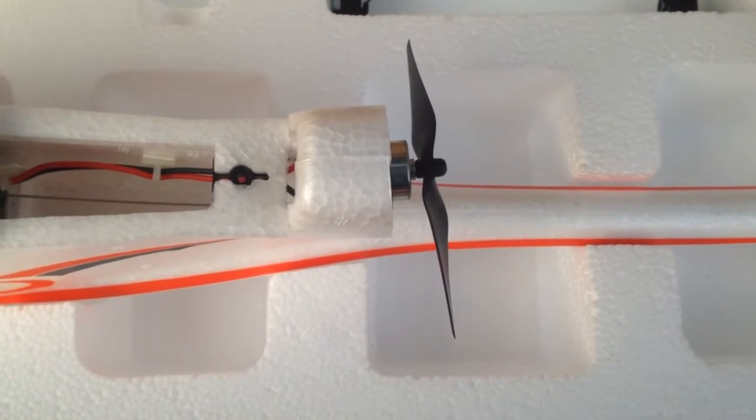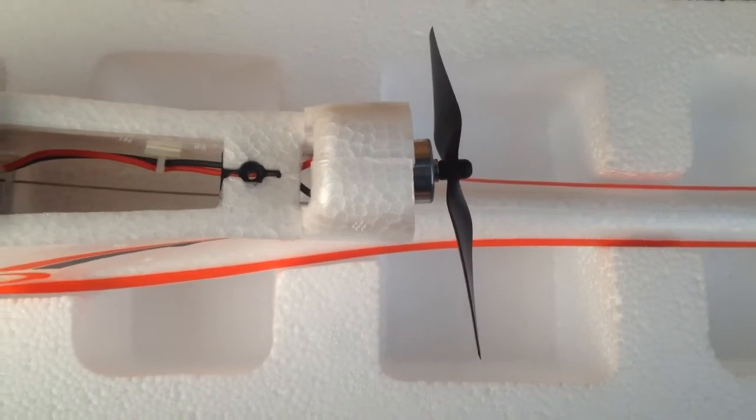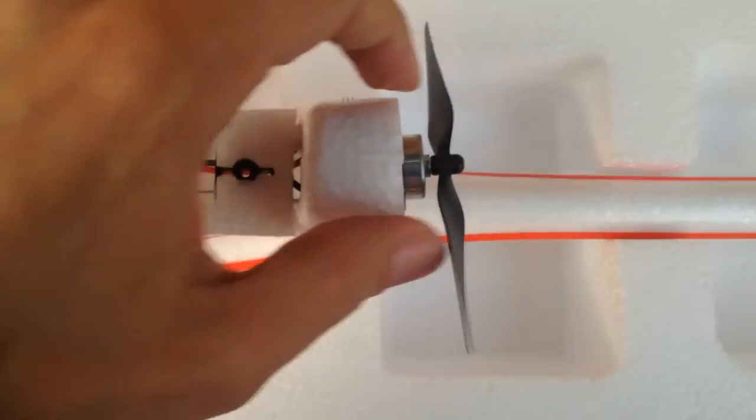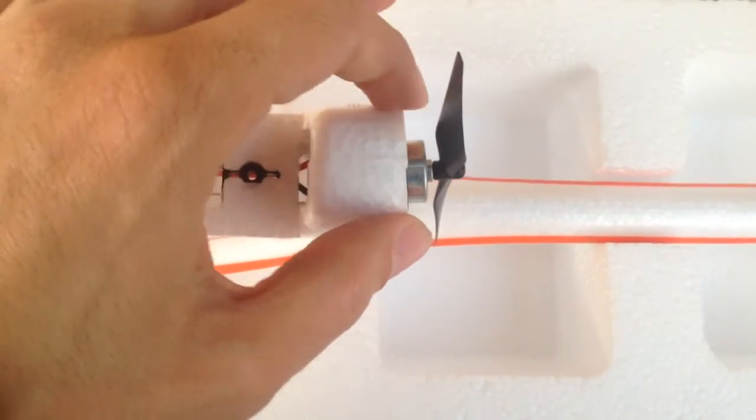Alright guys, so this is the AeroScout Mini. As you can see here, this is the new one that hasn't been destroyed yet, and it does have a minor turn to the motor.